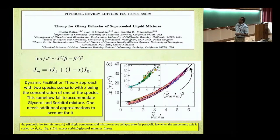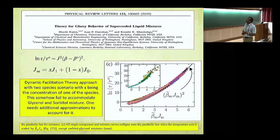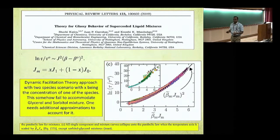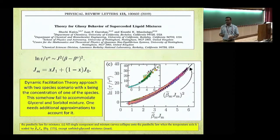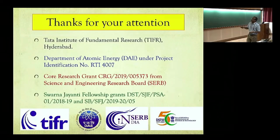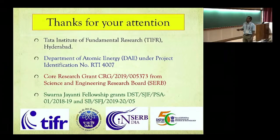In the low-temperature part, the pinning-like approach will be much better, but only if the molecular sizes are different. Most of the data that falls within the dynamical facilitation picture corresponds to systems where the molecular sizes are not too different. But for the sorbitol-glycerol case, there is a factor of two difference in the effective diameter. I will stop here. These are the people who contributed in the theory, the simulations, and the experiment. I want to thank TIFR and DAE for funding, the co-research grant, Sarno's fellowship from ACRB, and DST for further support. Thank you for your attention.